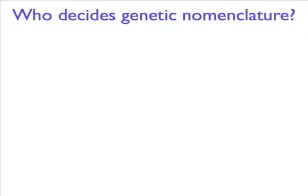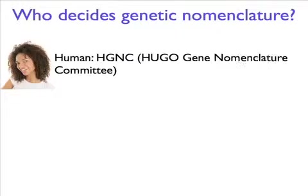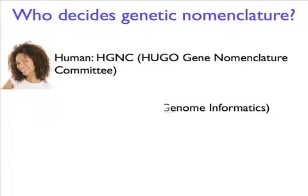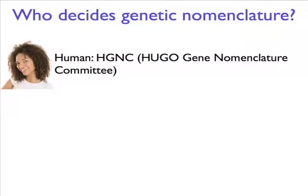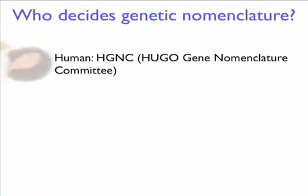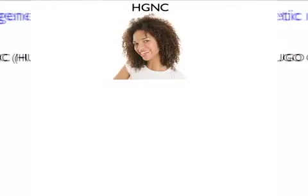Responsibility for official gene nomenclature for the various species found in scientific literature has been taken up by specific genome organizations and genome databases. Human nomenclature serves as the model for the gene nomenclature of other vertebrate species. The HUGO Gene Nomenclature Committee, or HGNC, determines official gene nomenclature for Homo sapiens.